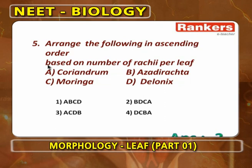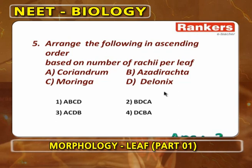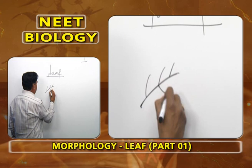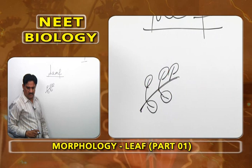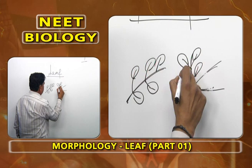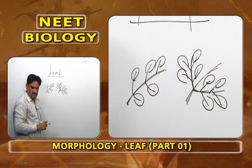Arrange the following in ascending order based on number of rachises per leaf. Azadirachta has only one rachis — the primary rachis — with leaflets arranged on both sides. Delonix has a primary rachis that produces secondary rachises, and leaflets are arranged on both sides of the secondary rachises.